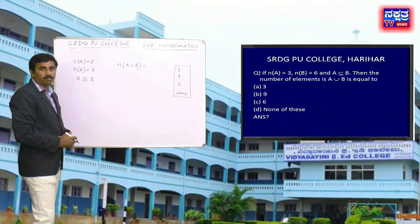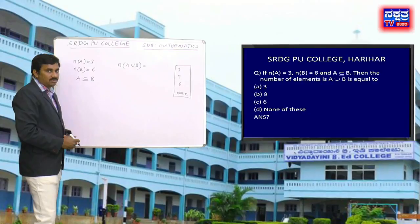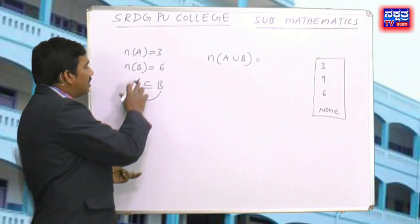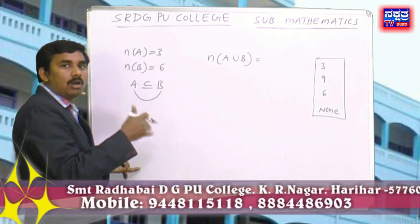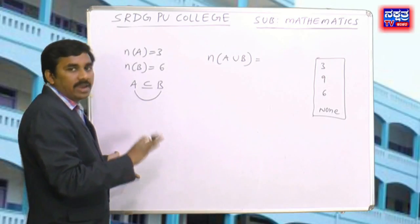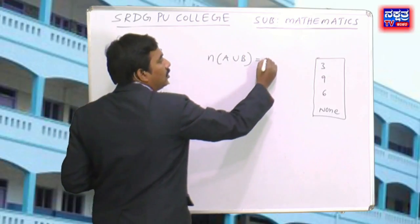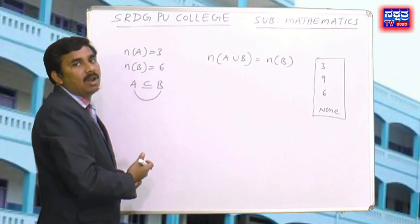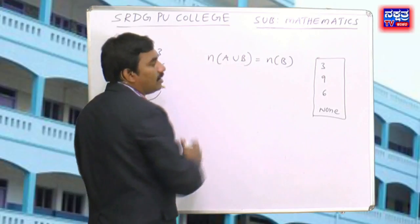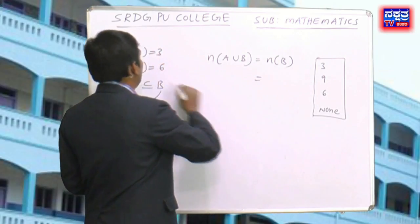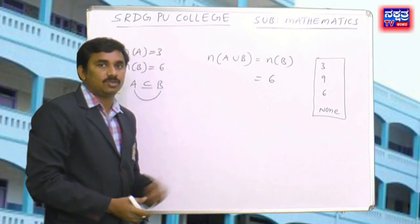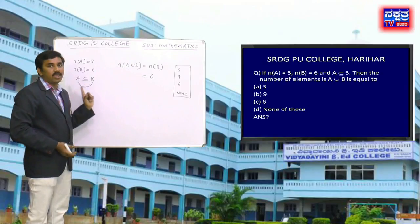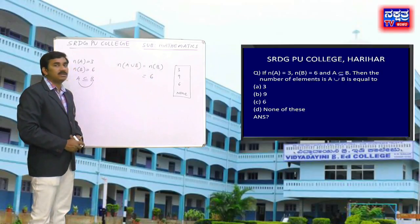No need to apply the formula n(A) + n(B) − n(A∩B) here. Since A⊆B, all elements in A are already included in B. Therefore n(A∪B) = n(B) = 6. Logically: if A⊆B then A∪B = B; if B⊆A then A∪B = A. The answer is 6.